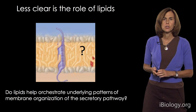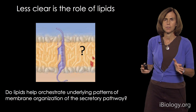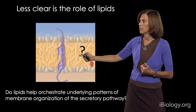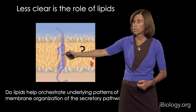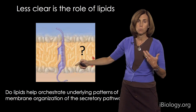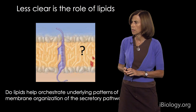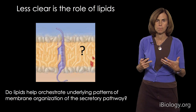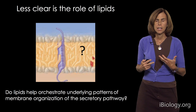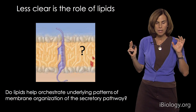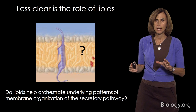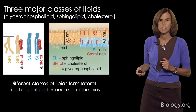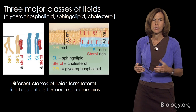Less understood are the roles of lipids in this process. Clearly lipids are important because they form the bilayer into which proteins are conveyed within this secretory system. But do lipids help orchestrate other features of this system? Are they regulating in a more fundamental way the way that the membranes are organized and proteins are flowing within this system? That's a question that I think is very interesting.